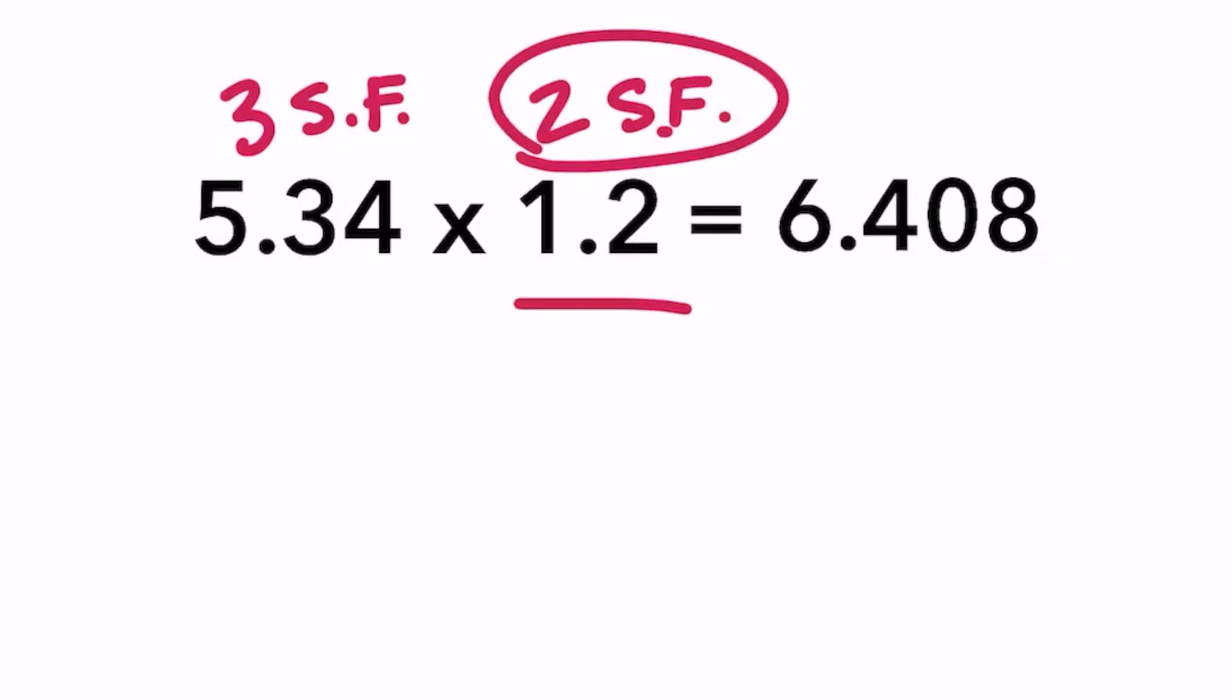To round our answer, we look at the second significant figure and round it depending on the digit directly to the right of it. Next to the 4 is a 0, which means the 4 stays the same. So our final answer is 6.4.